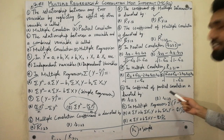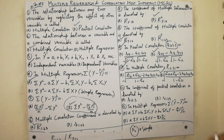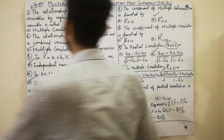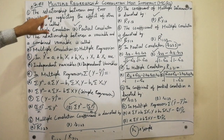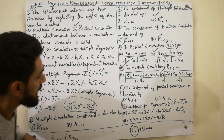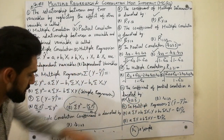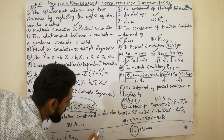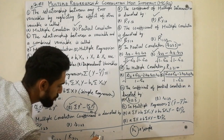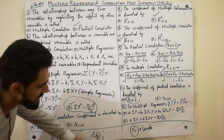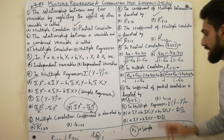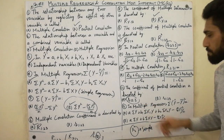The coefficient of partial correlation is always denoted by small r 12.3. This is because partial correlation is the relationship between any two variables — here variable 1 and variable 2 — by neglecting the effect of the other variable, which is variable 3. So the notation r 12.3 reflects two variables with one variable being controlled.